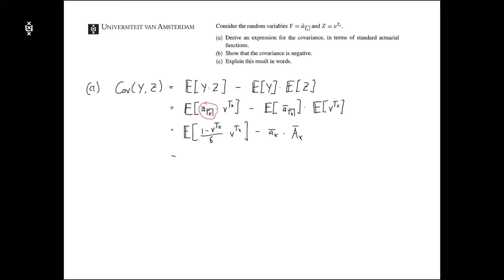All right, now we still need to compute the first expectation. So we can take our delta to get 1 minus v tx times v tx, and then minus this A x bar.